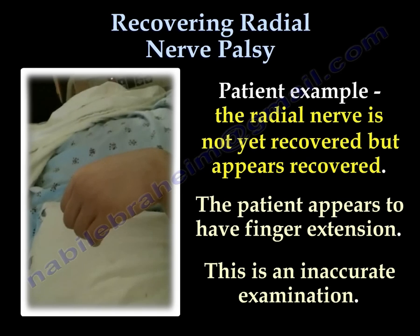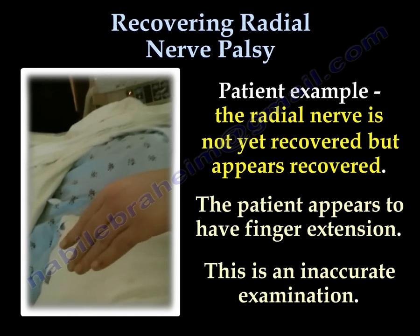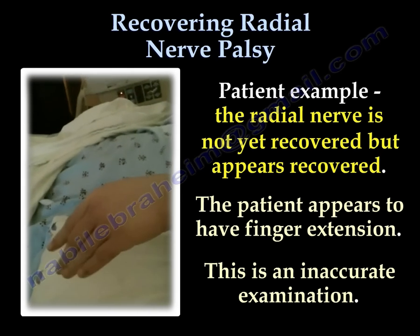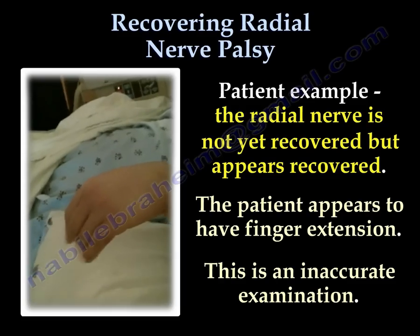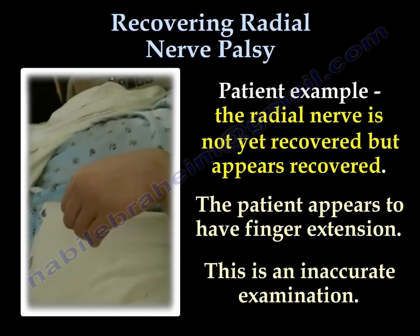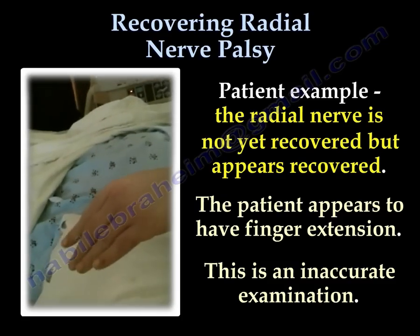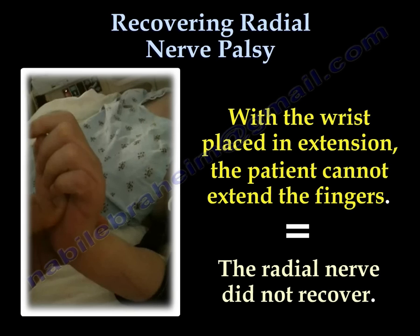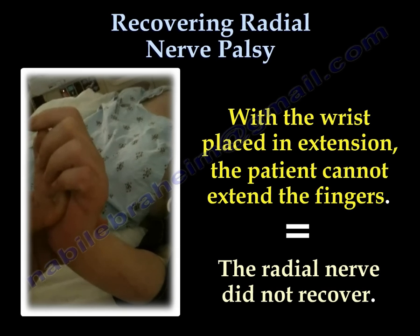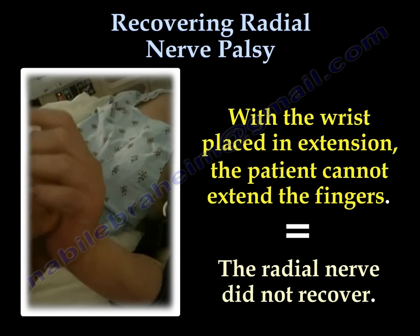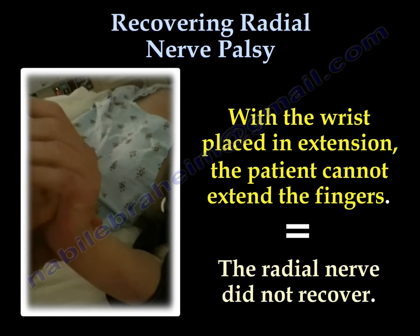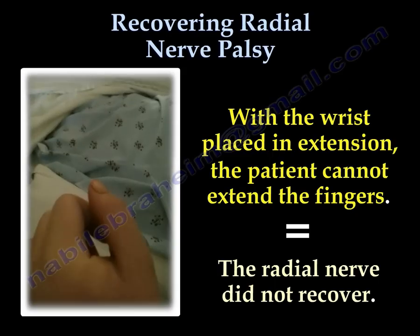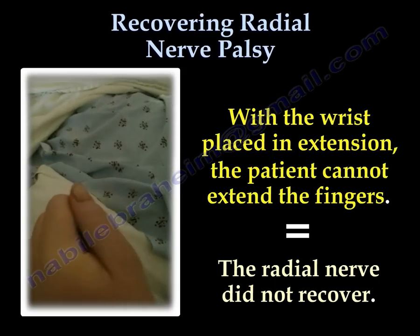This is an example of a radial nerve that has not yet recovered, but appears recovered. The patient appears to have finger extension, but this is an inaccurate examination. With the wrist placed in extension, the patient cannot extend the fingers, confirming that the radial nerve did not recover.